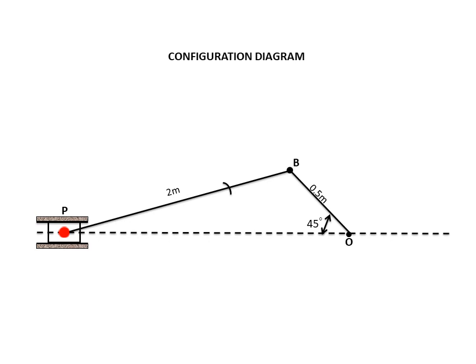Now, there is a point E given in the question. Take the gudgeon pin P as your center. Point E is located at a distance of 1.5 meter from the gudgeon pin. Scale 1500 mm by 20 gives 75 mm. Take 75 mm in your compass, put the needle at P, cut an arc and name that point E. Also mark the direction of rotation and the speed of rotation. That completes your configuration diagram.